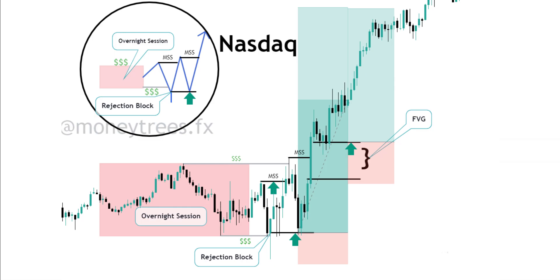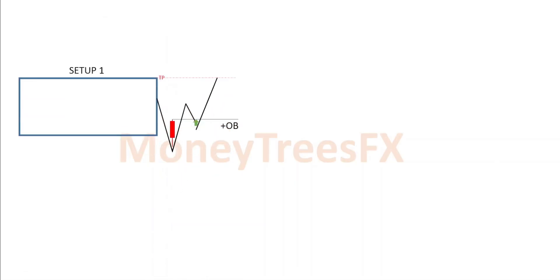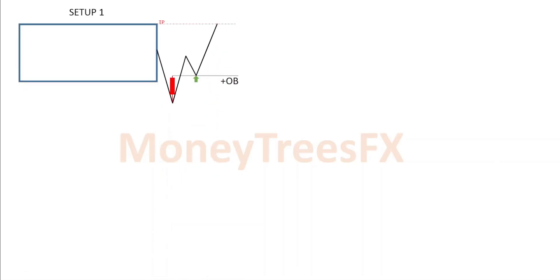We're going to be looking at the overnight session box. A lot of traders don't know that this session exists. We have three types of setups. The first one is the classic stop run below the box and using the candle that traded below as an order block to buy.